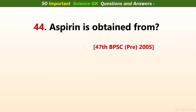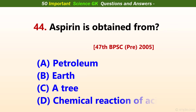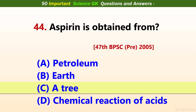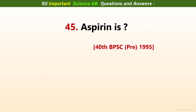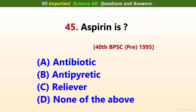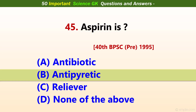Aspirin is obtained from? Answer C. Aspirin is? Answer B: Antipyretic.